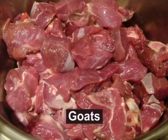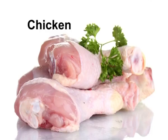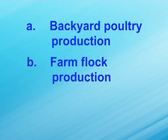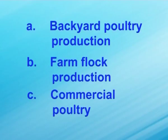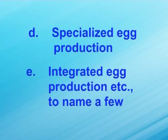Poultry enterprises may vary from basic backyard poultry practiced in many homes in the rural areas to keeping of mechanized and automated production plants. The various aspects of poultry production include production of eggs, meat (that is from goats, cows, etc.), fish, and poultry (that is chicken). The different types of poultry enterprises include backyard poultry production, farm flock production, commercial poultry, specialized egg production, integrated egg production, etc.